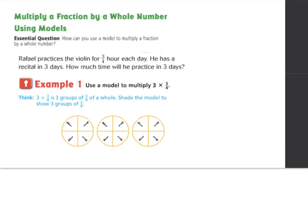So we can use the model below, showing three models cut into fourths. Since he has three days to practice, we're going to show three-fourths for each of those three days. Using the model, I'm going to go ahead and shade in how much he'll practice each day. So for day one, he's going to practice for three-fourths of that day. On day two, same thing — he's going to be practicing for three-fourths of an hour. And on the third day before his recital, he's going to practice for an additional three-fourths of an hour.